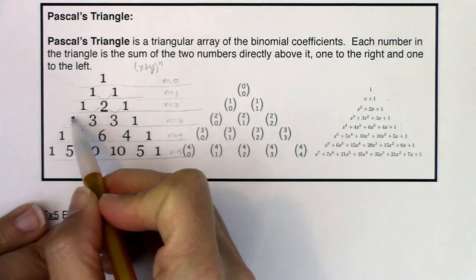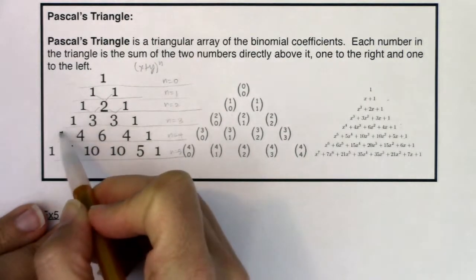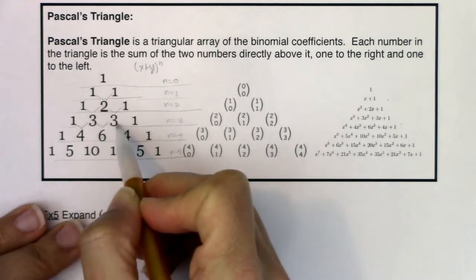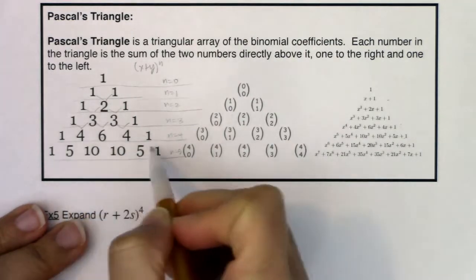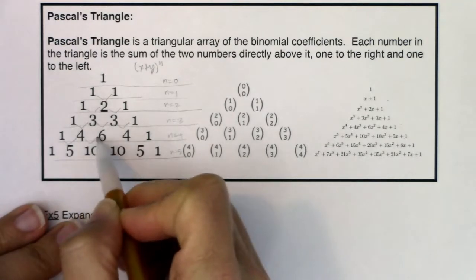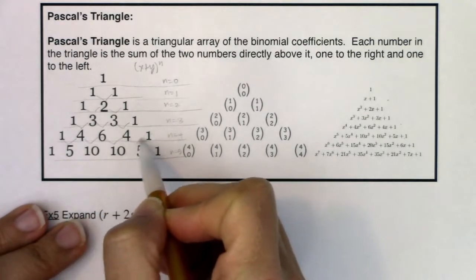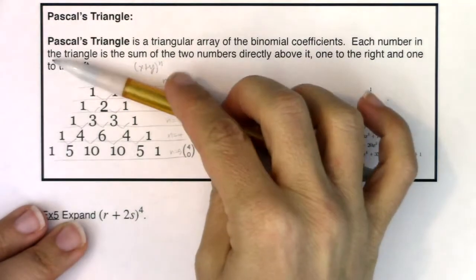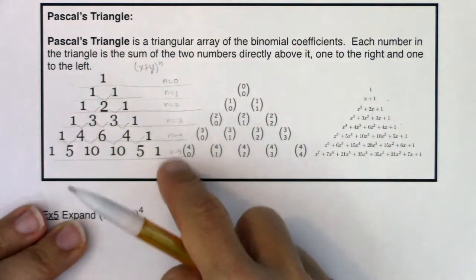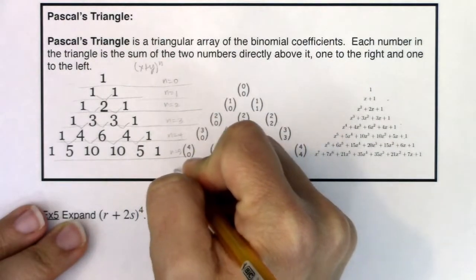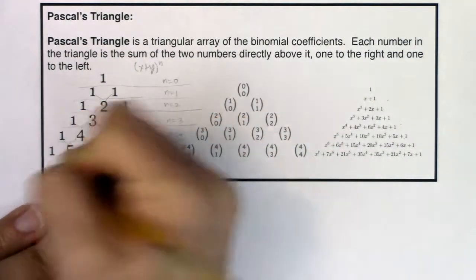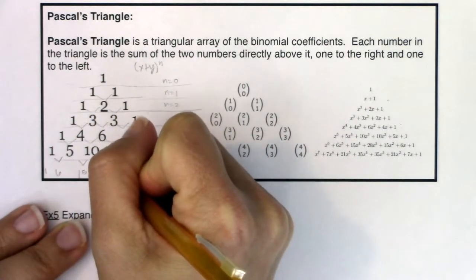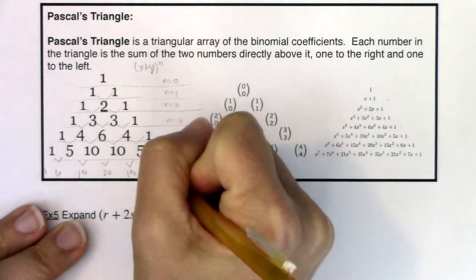To build the next row, you add another set of ones on the outside. Then: one plus three is four, three plus three is six, three plus one is four. Add another set of ones: one plus four is five, four plus six is ten, six plus four is ten, four plus one is five. You can keep building this triangular array by expanding and adding ones on the outside.